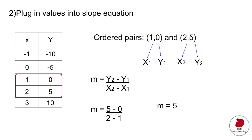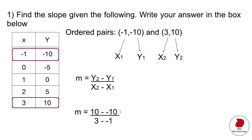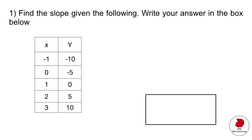Just to prove that, I'm going to select another set of ordered pairs and do the same thing. I'll take the slope equation and plug these numbers in — that gives me 20 divided by 4, which is equal to 5. So the slope is m equals 5.